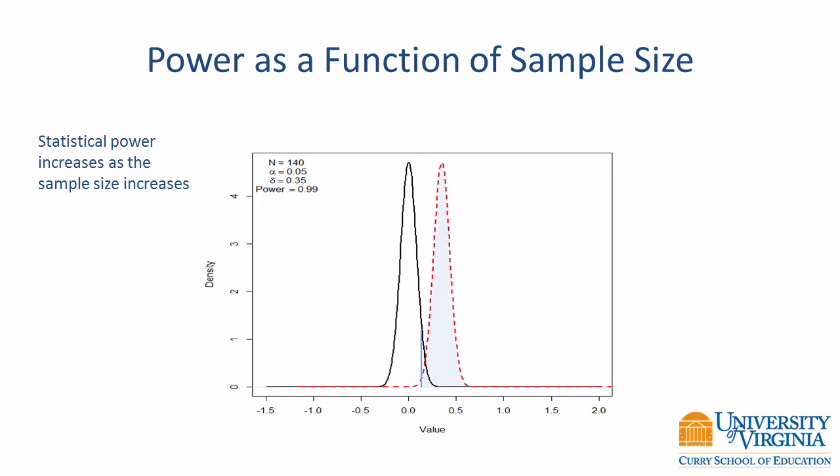Power increased as expected as sample size increased, but the way it works is different from the effect size. The sample size does not cause the distributions to shift away from each other. Rather, increasing the sample size decreases sampling variability. So the sampling distribution becomes more concentrated around the population mean. This makes the distinction between the null distribution and alternative distribution more clear.